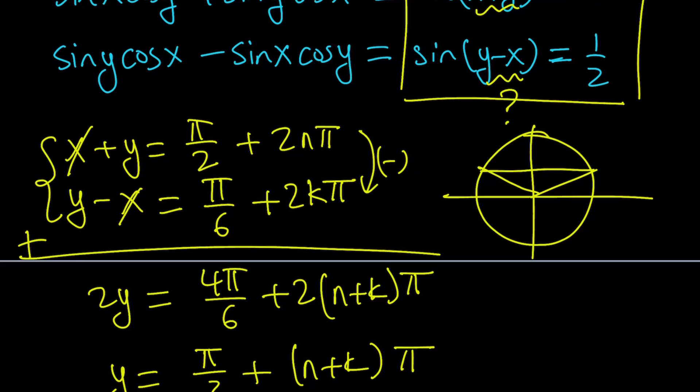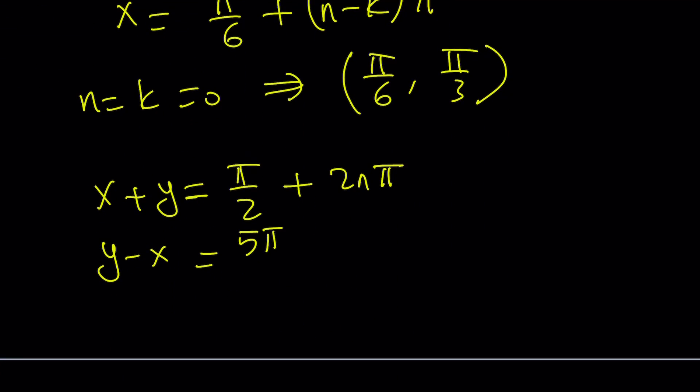And the other one is just going to be found by subtracting pi over 6 from pi, which is 5 pi over 6. So this is going to be the other option. Let's use k again. And now we're going to do the same thing.